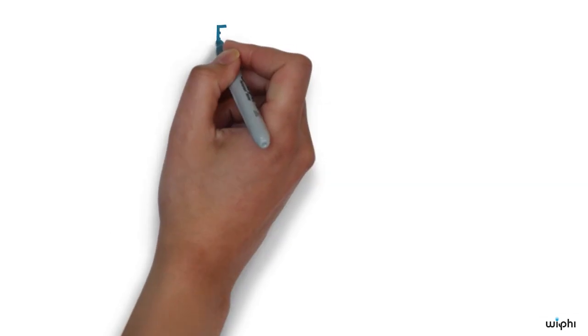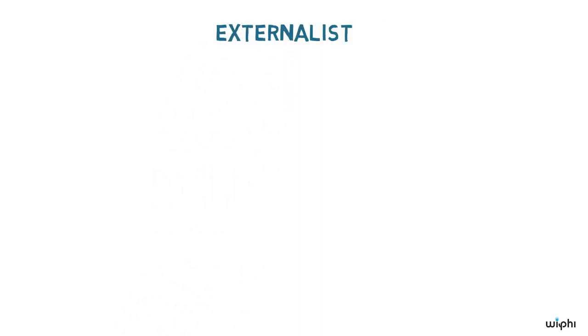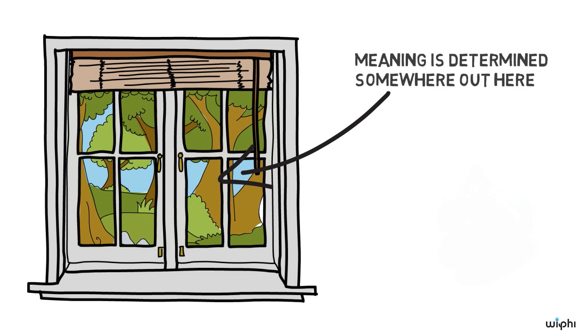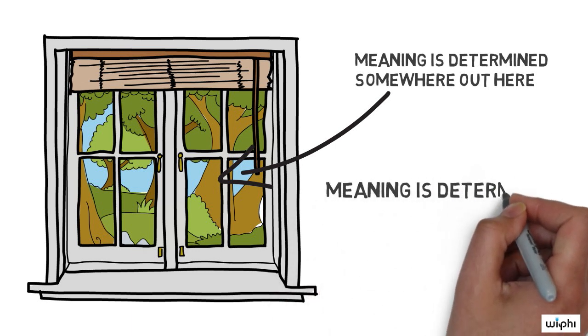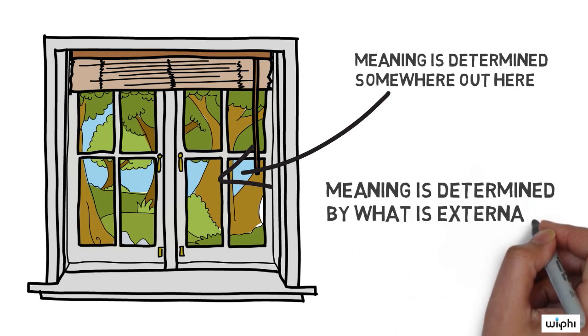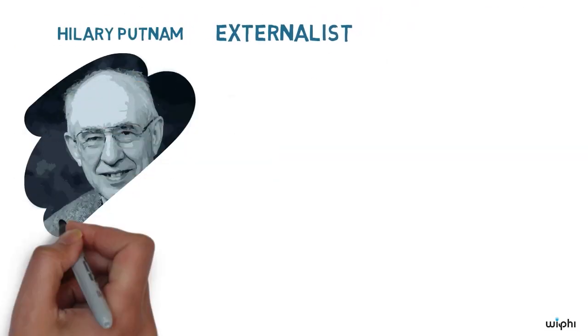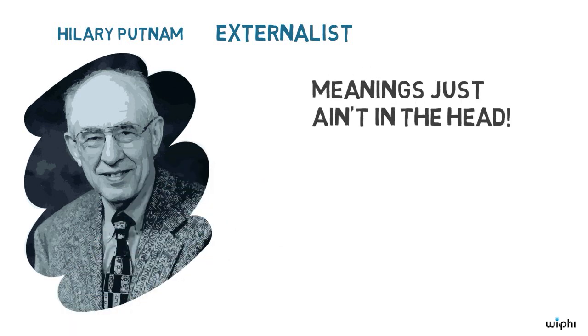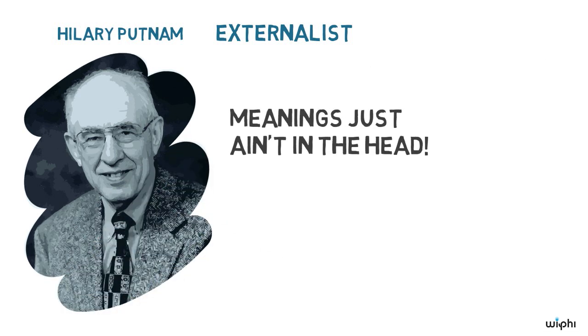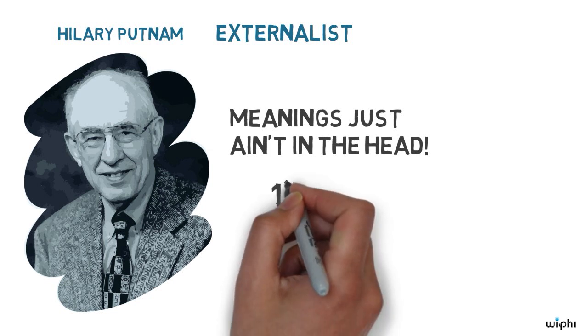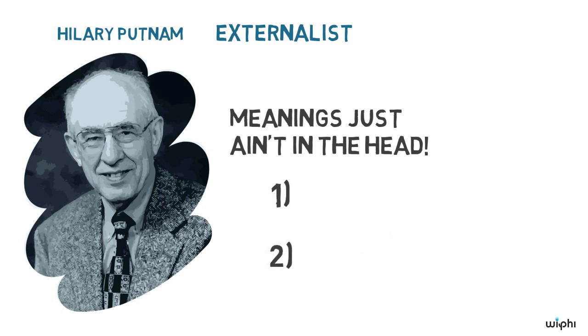Next, let's look at how an externalist would answer the question, what makes our words or utterances meaningful? Externalists hold that meaning is determined by what is external to a language user. The philosopher Hilary Putnam famously argued that meanings just ain't in the head. He argues that meanings are external in an important way. He starts his argument by explaining two conditions many philosophers have accepted.